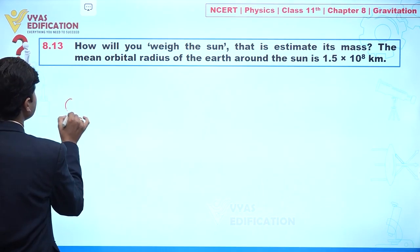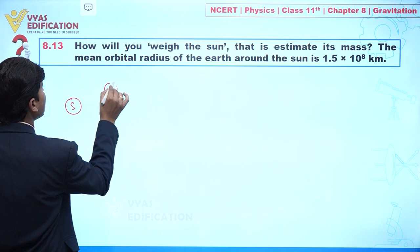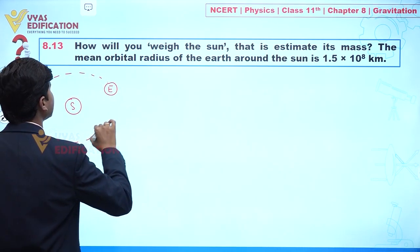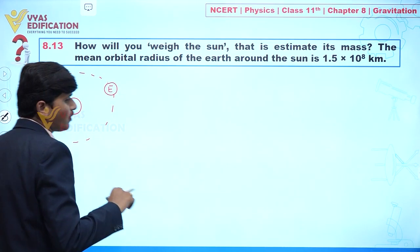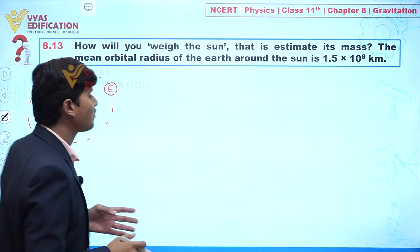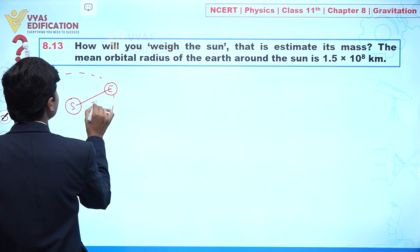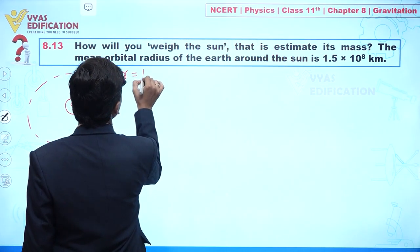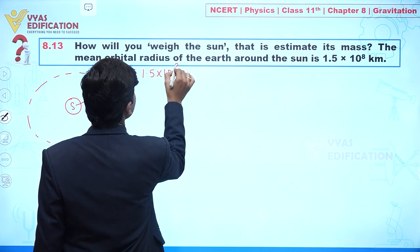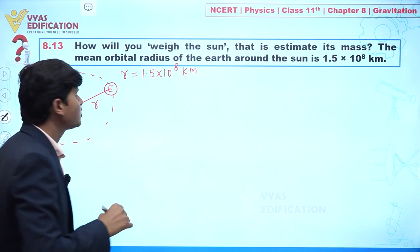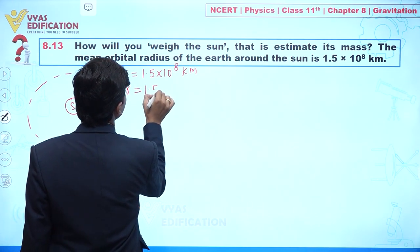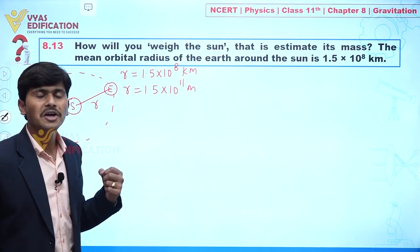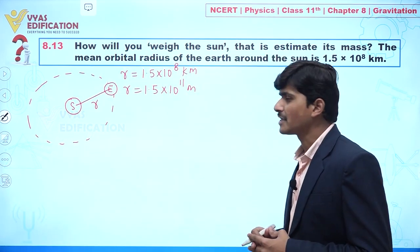Let's suppose this is the Sun and here we have Earth. Earth is revolving around the Sun in an elliptical path, but for calculation purposes we are assuming a circular path. The distance between the Sun and Earth is small r, given as 1.5 × 10⁸ km, which equals 1.5 × 10¹¹ meters. Our objective is to calculate the mass of the Sun.